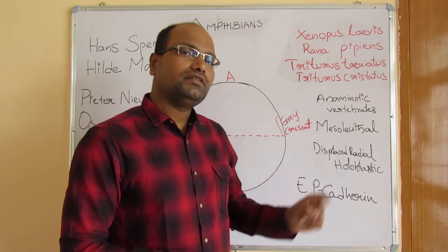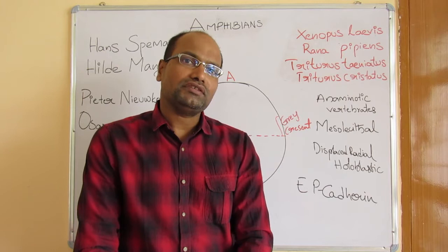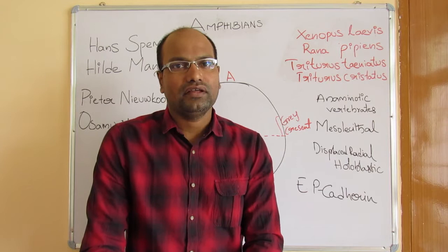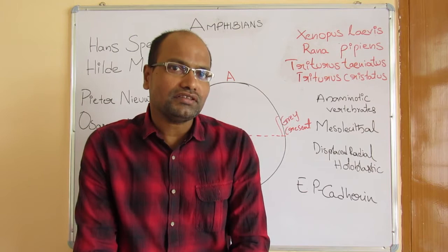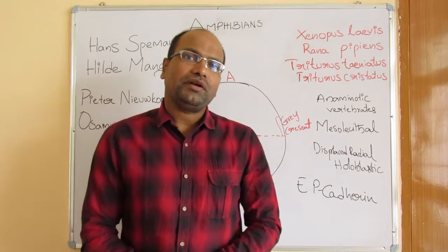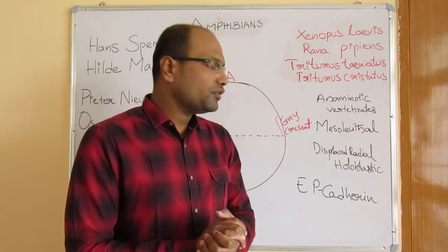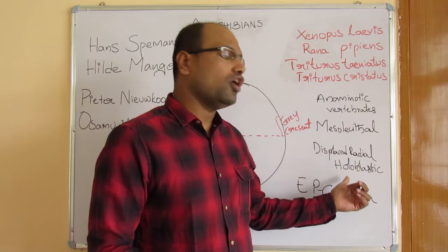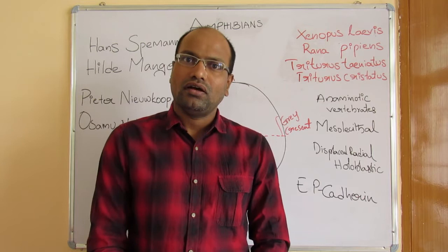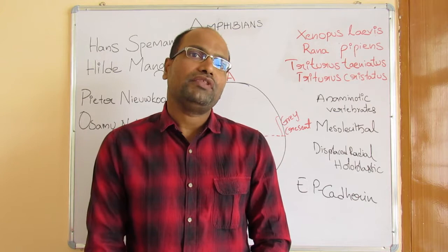The eggs produced by these amphibian model organisms are mesolecithal type, meaning the egg has a moderate amount of yolk inside. One specialty is that the yolk is distributed towards one side of the egg, giving it polarity. The type of cleavage exhibited by mesolecithal eggs is displaced radial holoblastic cleavage — holoblastic because the cleavage bisects the egg completely, and displaced because the yolk-rich area is spared from cleavage.